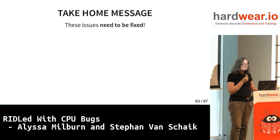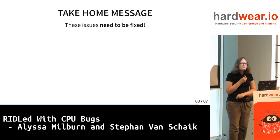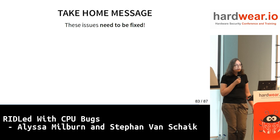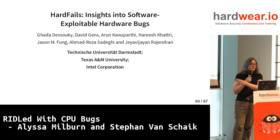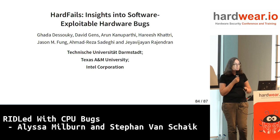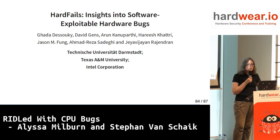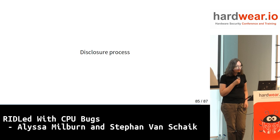My take-home message is: these issues need to be fixed, which means they need to be understood. I don't get the impression that many people at Intel understand these issues — certainly very few people outside Intel have any idea. If you're interested in CPU bugs in general, there's a great paper at USENIX called Hard Fails, with some authors from Intel. It gives an idea of all the other kinds of vulnerabilities you run into when making CPUs — our verification tools don't spot this stuff, our engineers don't spot this stuff, and it ends up left in CPUs.